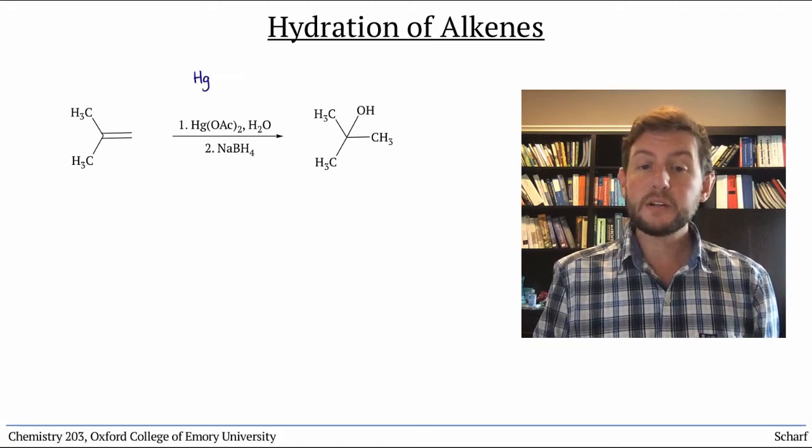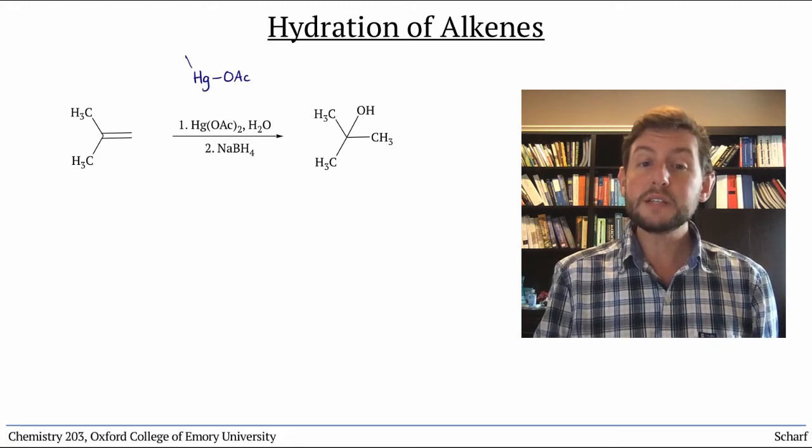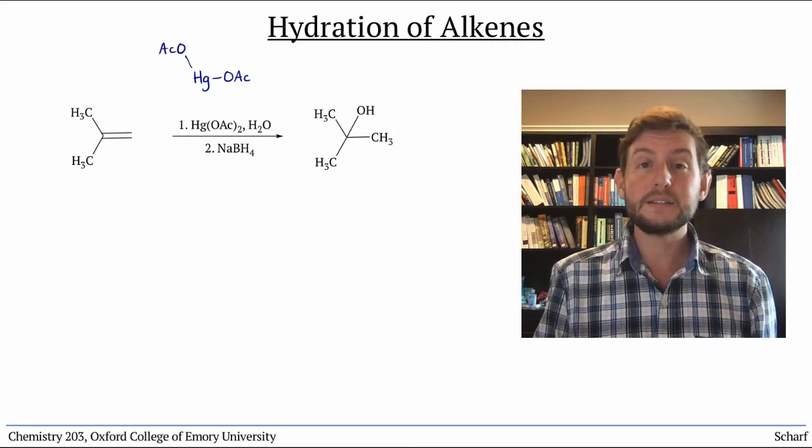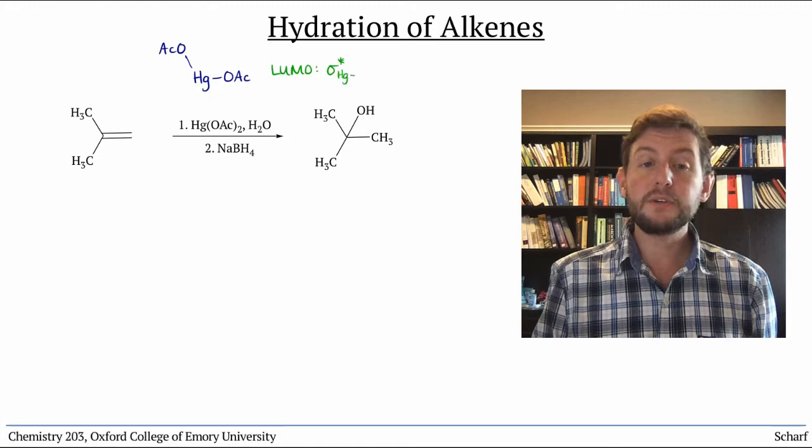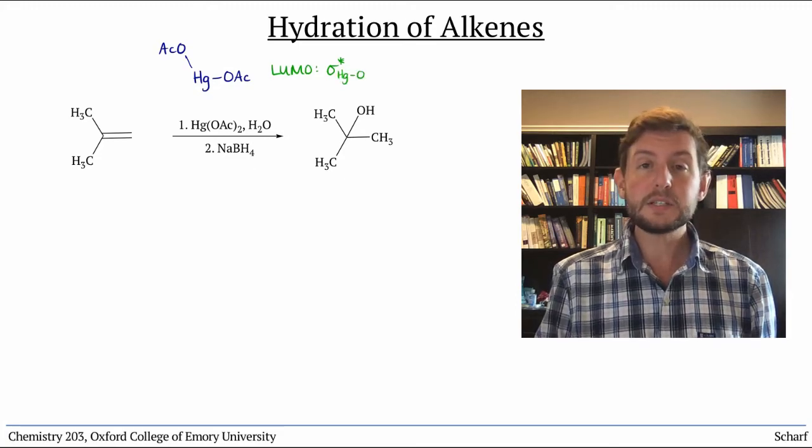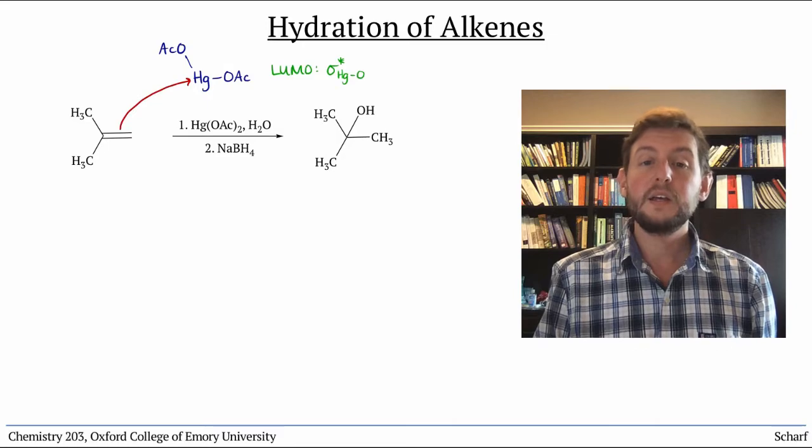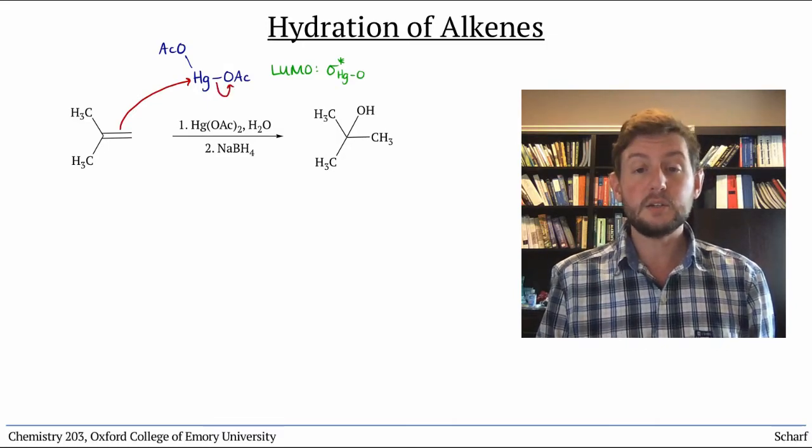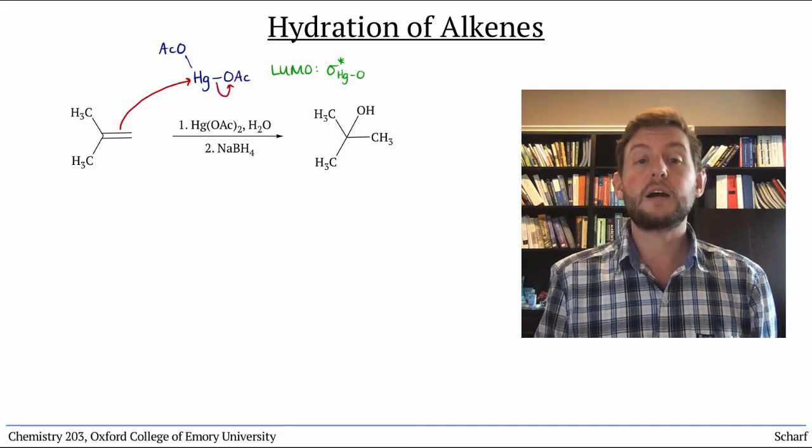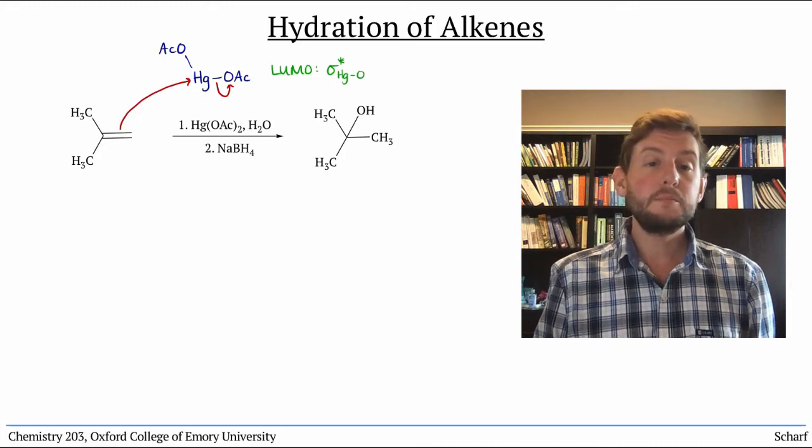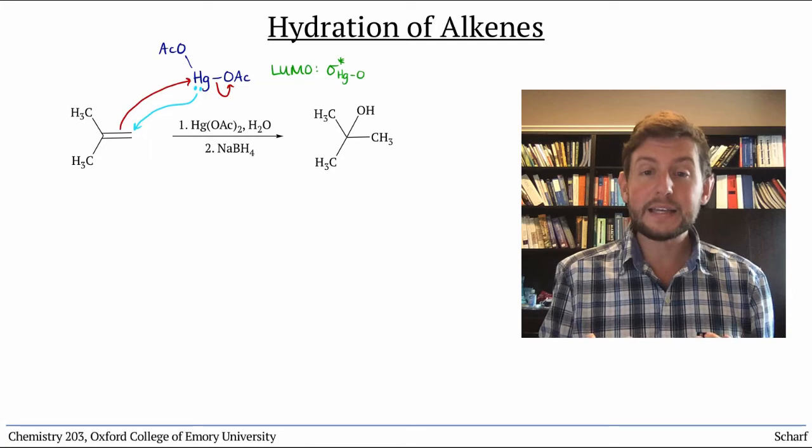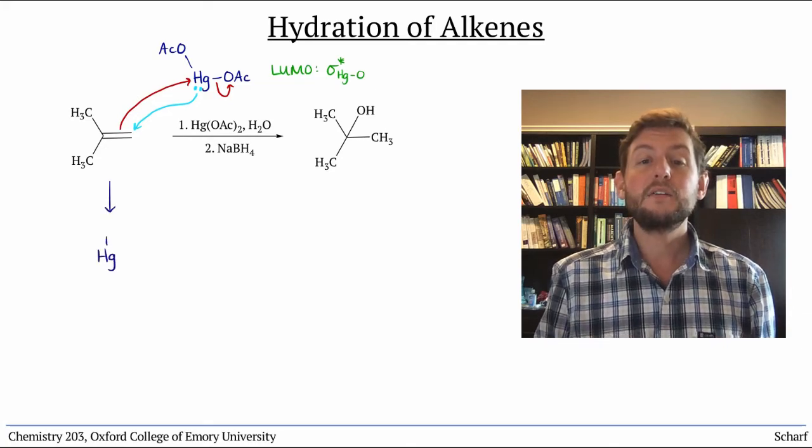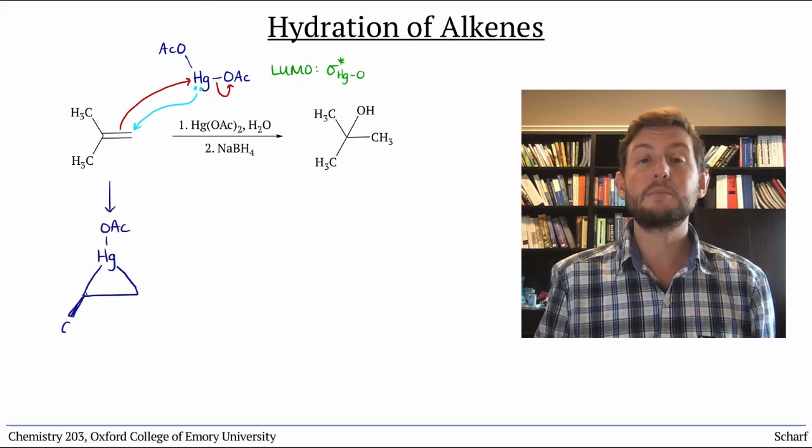The first part of this reaction closely resembles a few other mechanisms you've seen recently. The LUMO of mercury acetate is the sigma star HGO orbital. So pi cc donates into it, breaking one of the mercury-oxygen bonds. Meanwhile, a lone pair on mercury donates back into pi star cc, forming a three-membered ring known as a mercurinium ion.